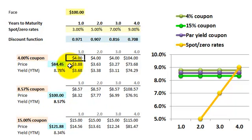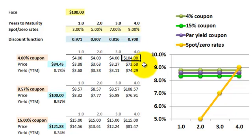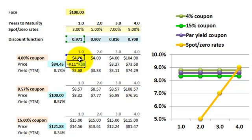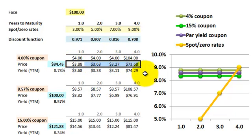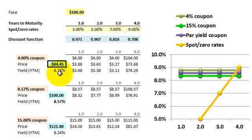Now we can look at the PAR yield, which is just one of the yield to maturities. I start with a 4% coupon bond. Here's the set of future cash flows: the bond pays $4, $4, $4 in year three, and then in year four a $4 coupon plus the return of par. I use the discount factors to price this bond — the $4 coupon in year one is multiplied by the one-year discount factor, giving a present value of $3.88. Summing all the discounted cash flows gives a bond price of $84.45.